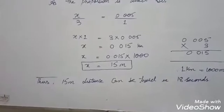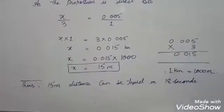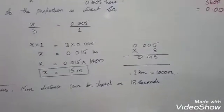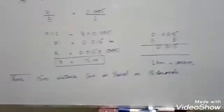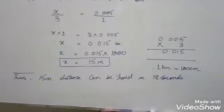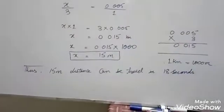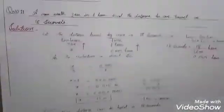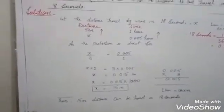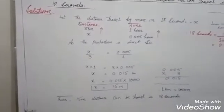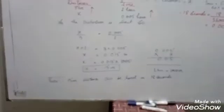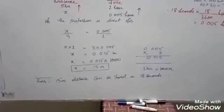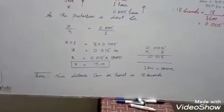So x equals 0.015 kilometers. Since 1 kilometer equals 1000 meters, we multiply 0.015 by 1000, which gives x equals 15 meters. So the person travels 15 meters in 18 seconds.